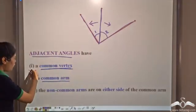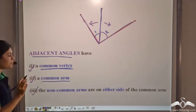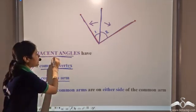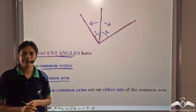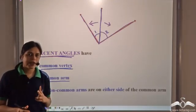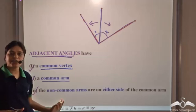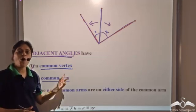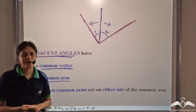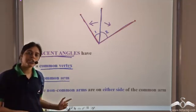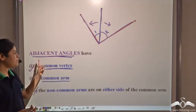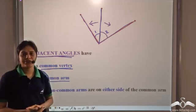If all three conditions are satisfied, then we say that the angles are adjacent angles. Note that all three conditions have to be satisfied — not just one or two. All three conditions have to be satisfied for them to be adjacent angles.